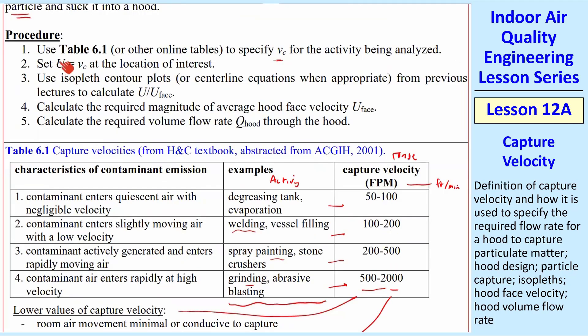We set U, the actual speed to that, at the location of interest. So it goes back to what we've learned before. Use the isopleth contour plots or equations when they're appropriate if you're on the center line. From the previous lectures to calculate U over Uface, and then we calculate Uface, and then we calculate Qhood, the flow rate through the hood. The last three steps in this procedure are basically the same as what we've already done.